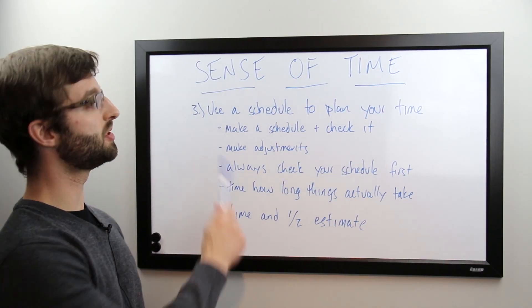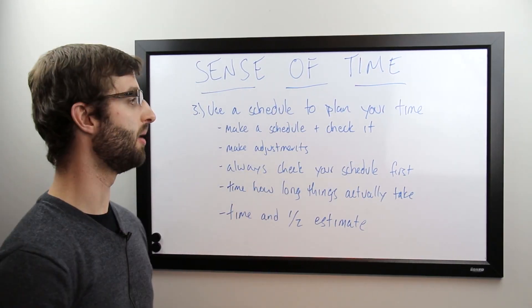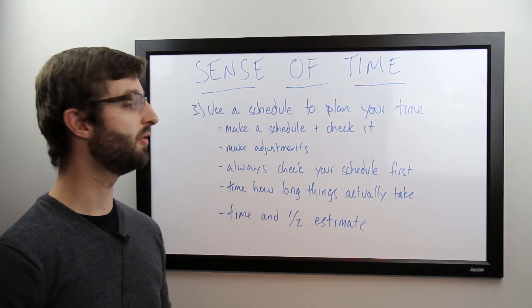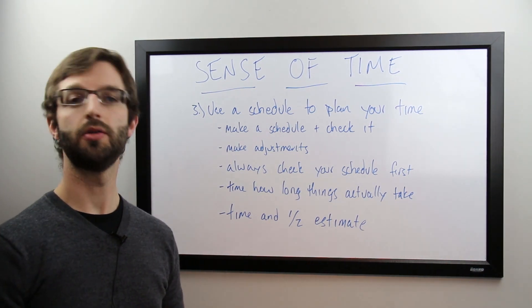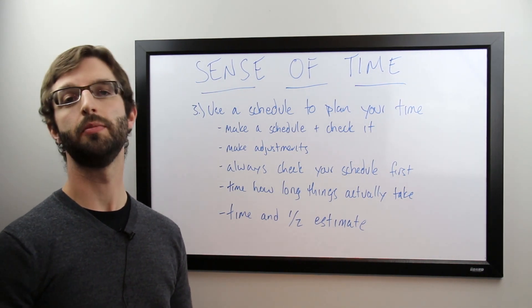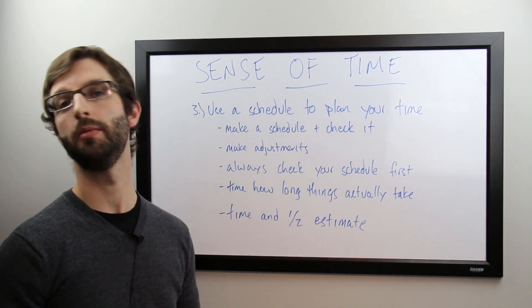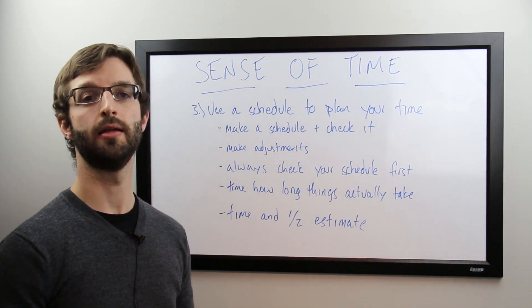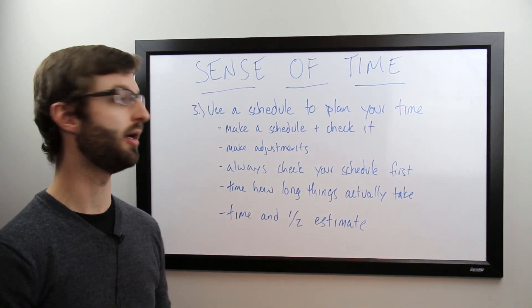And the third tip is to use a schedule to plan your time. Make a schedule for every day, every week, and check it. You can use your smartphone to set reminders to check your schedule. A good time is the beginning of the day, maybe during breakfast, maybe again at lunch, and then again at the end of the day to see how your day went and how things are fitting into your overall plan.